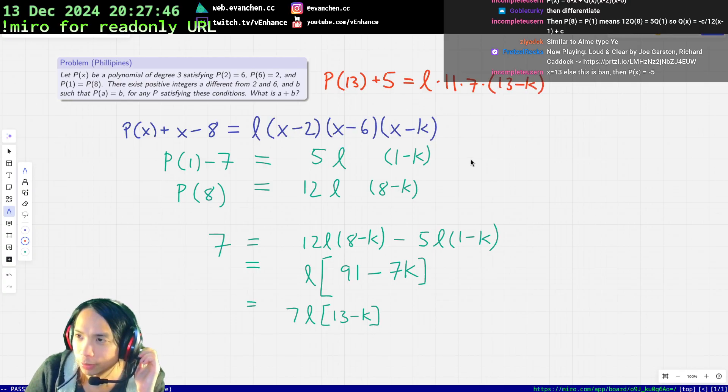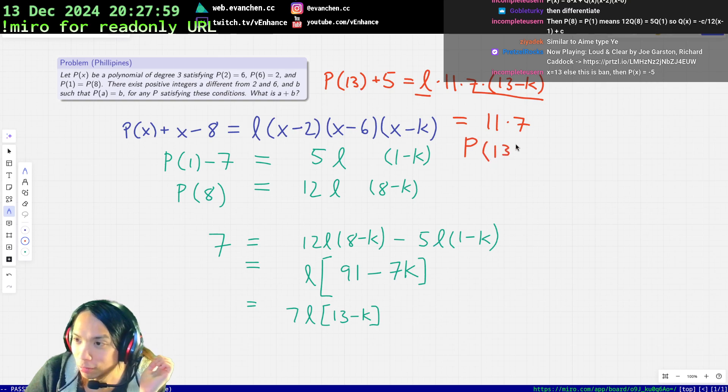Anyways, this is what we get and I hope I didn't make an arithmetic error, although given my track record... Yeah, this is all equal to 11 times 7, so P(13) is 72, I hope.